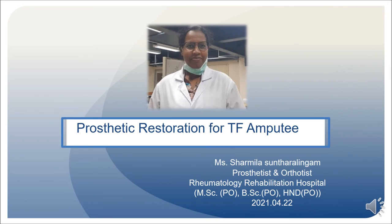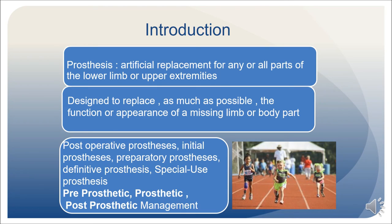Good afternoon. I am Sharmila. Before we move into the cases, I would like to introduce you to the prosthesis. The prosthesis is an artificial replacement for any or all parts of the lower limb or upper extremities. The main purpose of the prosthesis is to provide as much function as possible and also to give the patient a good appearance. For the lower limb, there are five types of prostheses. For this presentation, we will talk about the definitive prosthesis — a step prosthesis that patients use for normal day-to-day activities. There are three stages of prosthetic management: pre-prosthetic, prosthetic and post-prosthetic management.